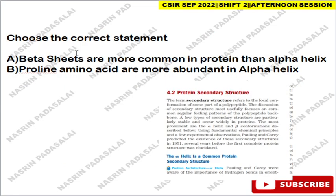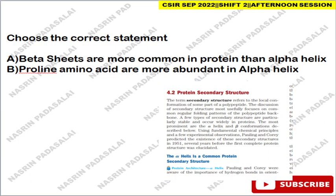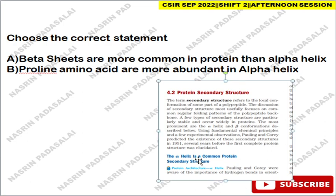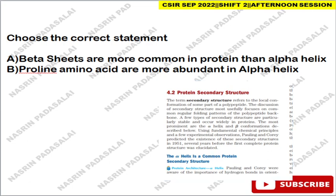Next, choose a correct statement. I think one question was asked about secondary protein structure. In the Lehninger book, they mention beta sheets are more common in proteins than alpha helix — that is a wrong option, because in the book itself the first section states that alpha helices are the more common protein secondary structure compared to beta sheets.